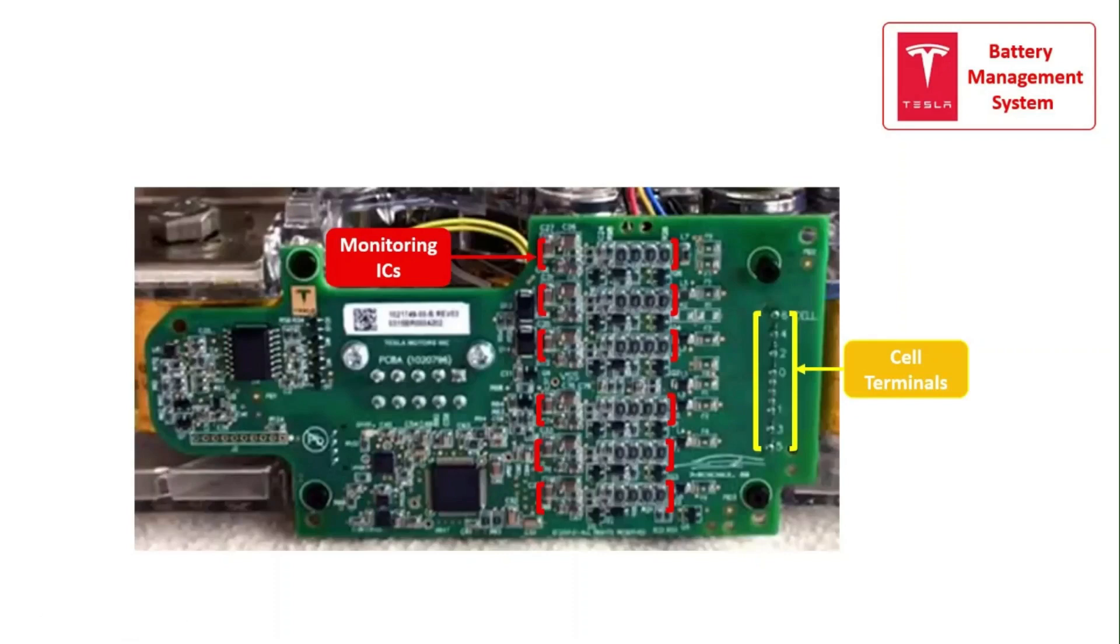The IC by TI used in the BMS can be daisy-chained to need only one communication connection to the system. The BMS is integrated into every module and monitors the battery life, temperature, and charge-discharge cycle of cells.